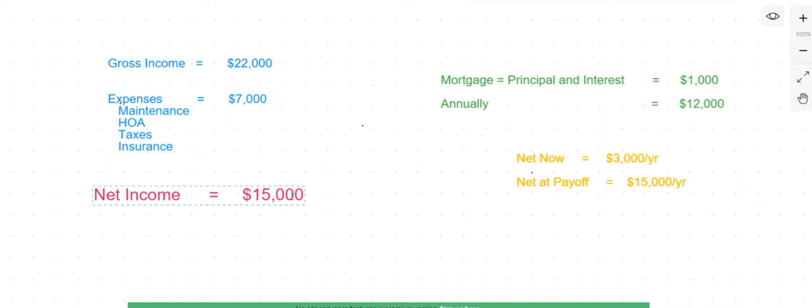Subtract it from your gross. That is the number that we want to use. In this case, I'm using $15,000. That's the number that will go into the income field for us in rental income.